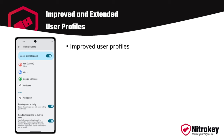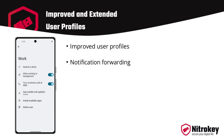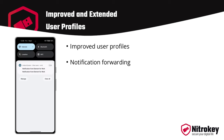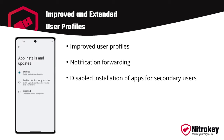The user profiles have been improved and extended. In standard Android, user profiles are limited to four (three plus guest). GrapheneOS raises the limit of secondary user profiles to 32 (31 plus guest). Forwarding notifications from users running in the background to the currently active user is possible — by default this is disabled but can be enabled in any user profile.